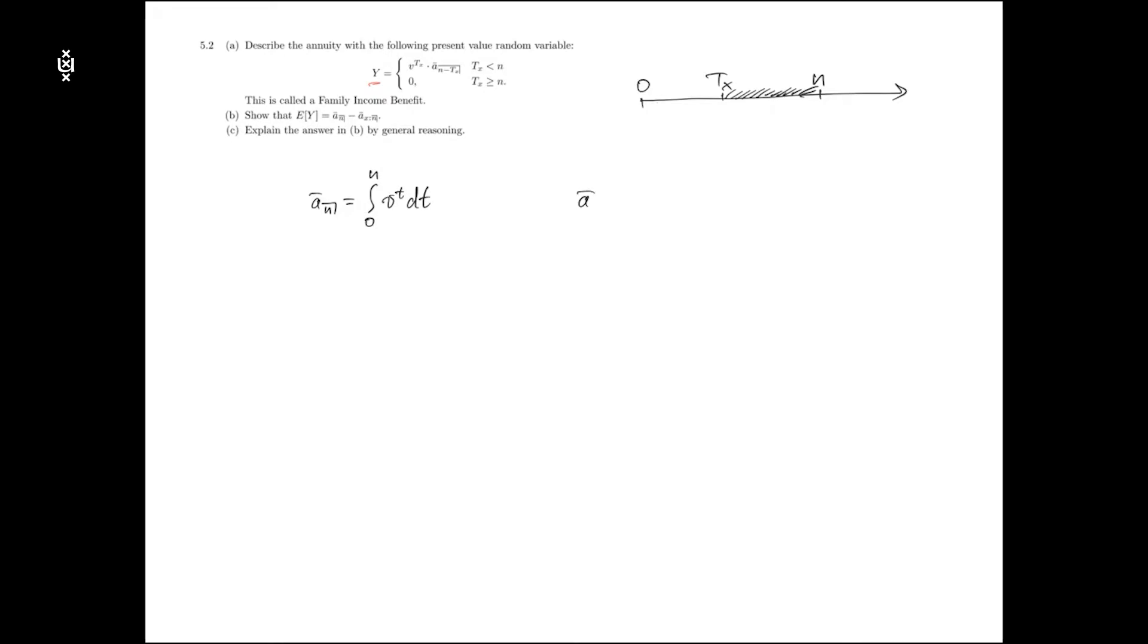On the other hand, a whole life annuity paid continuously can also be written as an integral from 0 to Tx v^t dt, where Tx is a random variable.